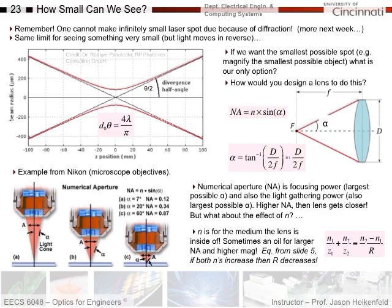How small can you see with a lens if you're using it for an imaging-type system? That's going to come back to the same relationship of divergence. If I want to see a small object, it's related to how small I can focus the light down — treating it as focusing light down to a small point. If I want to see the smallest possible object, you want to design a lens with a high numerical aperture, NA. Numerical aperture is the refractive index N times the sine of the half-cone angle alpha for the light-gathering space between the lens and what you're trying to see.